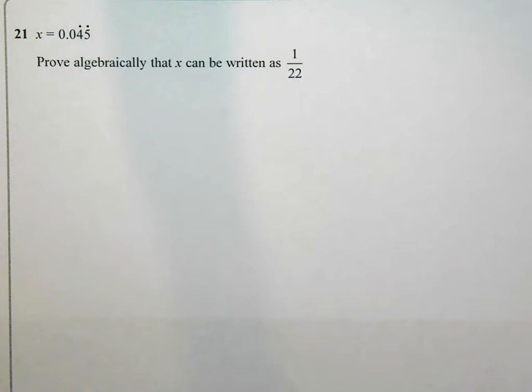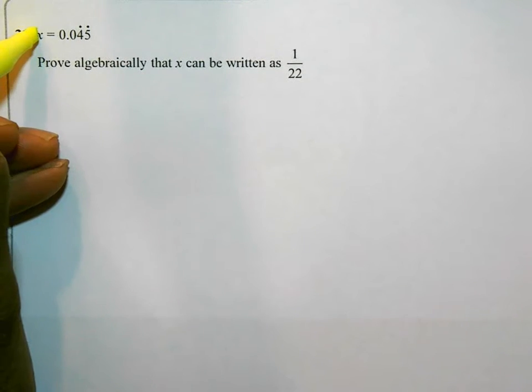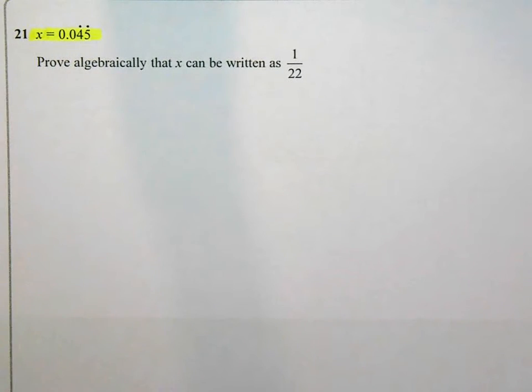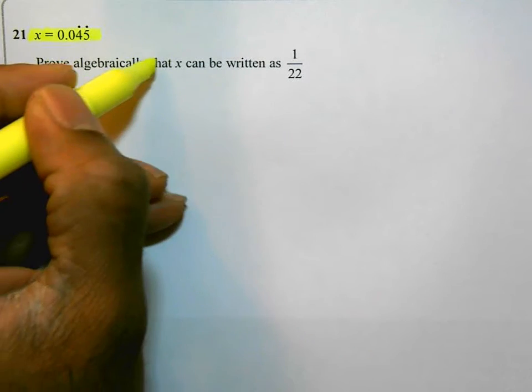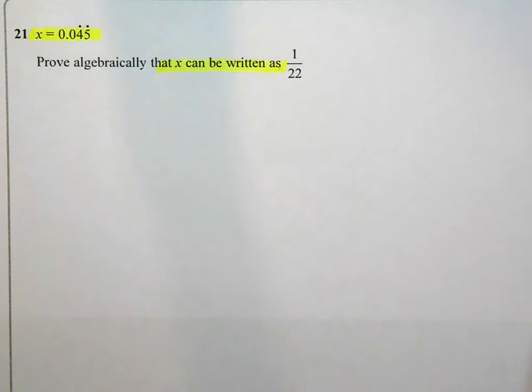This is question number 21 on the June 2015 non-calculator paper. We've got a recurring decimal here, x is equal to 0.045 with the 4 and the 5 recurring. Prove algebraically that this can be written as 1 over 22.